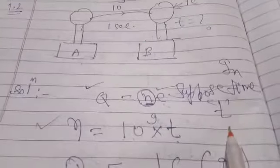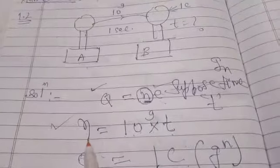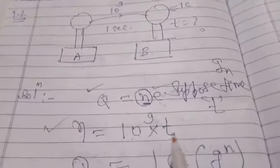So if in one second—pay your attention please—if in one second 10 raised to power 9 electrons are coming from A to B, and I suppose that in time t we get the charge equals to 1 coulomb. So the total number of electrons which will be transferred in t time...